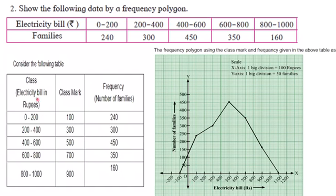Classes, electricity bill in rupees is given. Class mark, that is midpoint of the class: 0 to 200 divided by 2, 0 plus 200 divided by 2 that is 100. 200 plus 400, 600 divided by 2 that is 300.